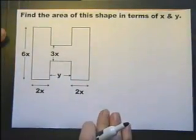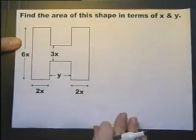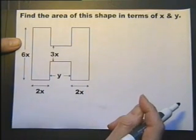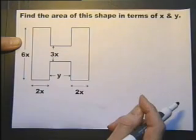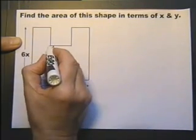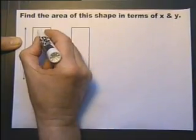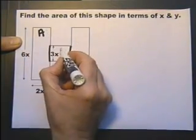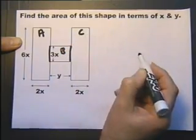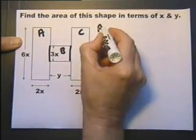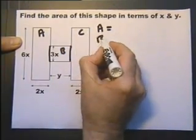Find the area of this shape in terms of x and y. Now this is what we call a composite shape because it's made up of several other shapes. We can split it into rectangles. I'm going to choose to do it like that. So if I find the area of A and the area of B and the area of C and add those together, I will have the total area.